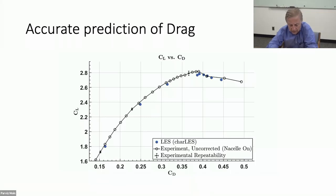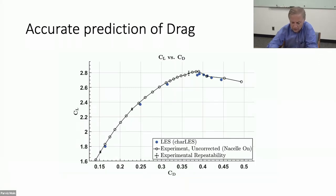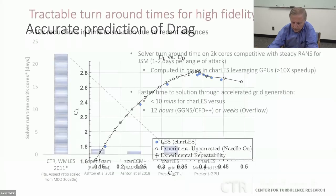That is really what has been the surprising development. If you have the right numerics — with low dissipation and conservation principles obeyed — then you can get away, perhaps, on some engineering quantity calculations with a relatively low number of grid points.